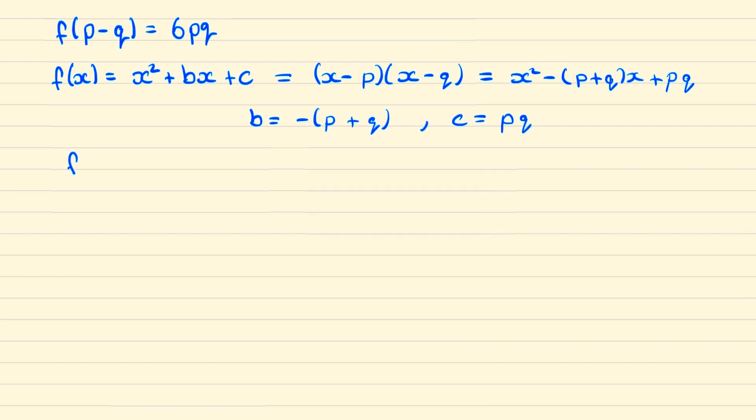If we consider f(p - q), we substitute x for p - q into this equation. Then we show that (p - q) - p becomes -q, and (p - q) - q becomes p - 2q.